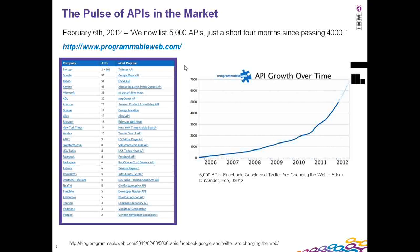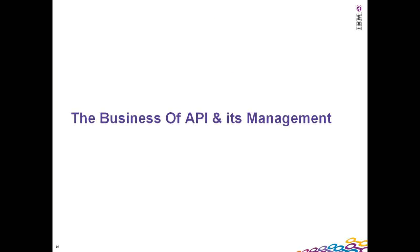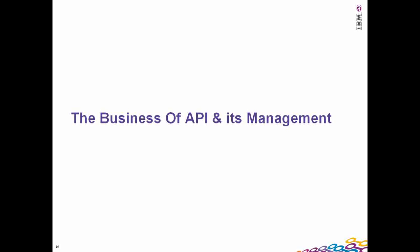A further summary of how the growth of APIs is faring in the market: it has always shown an inclining trend, and that inclining trend is only going further steep as we see in the last couple of years, and it's going to continue so in the upcoming years as well.